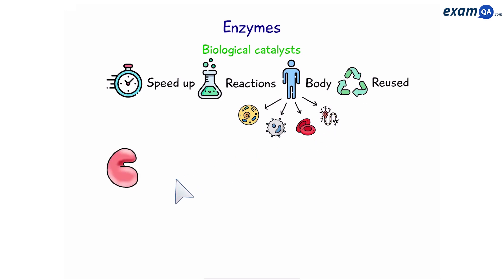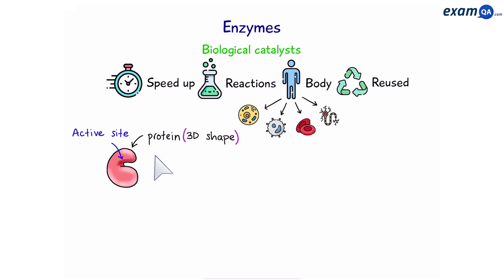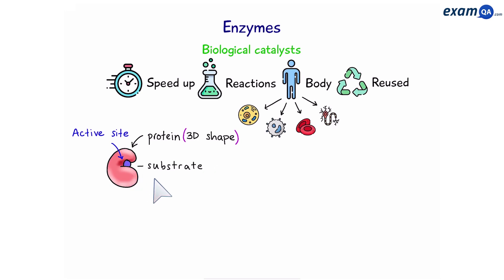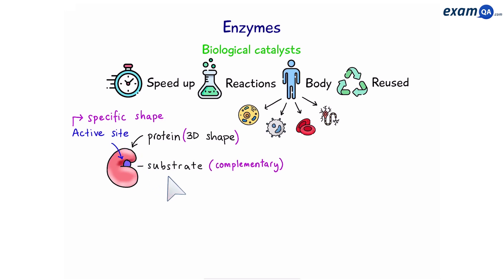An enzyme is basically a protein with a 3D shape, and the most important part of its 3D shape is this area, also known as the active site. This is where substrate or reactants will come and bind to in order to be turned into products. The active site has a specific shape, which means the shape of the substrate has to be complementary to it.